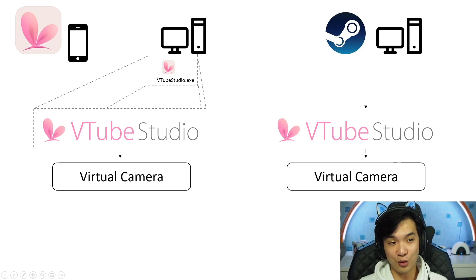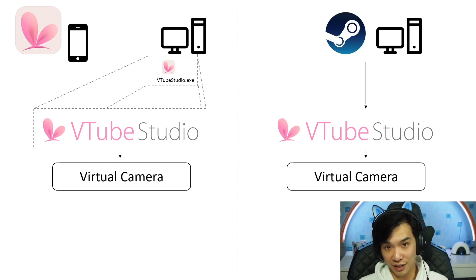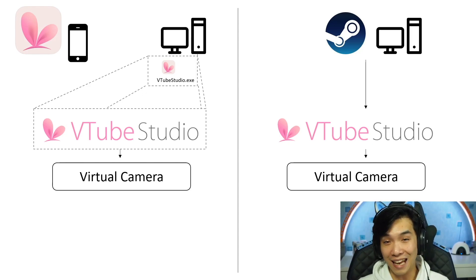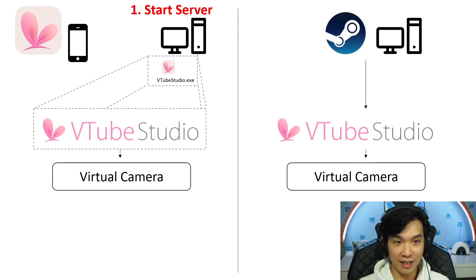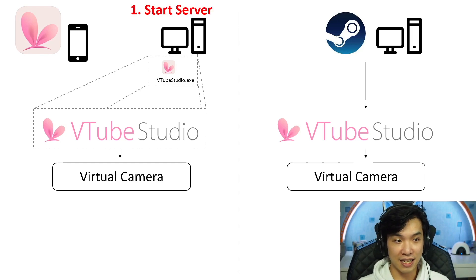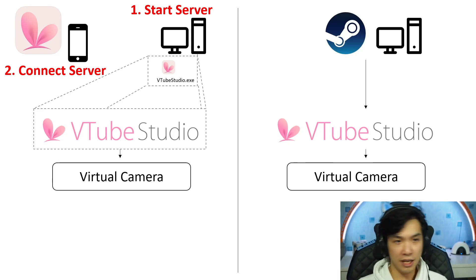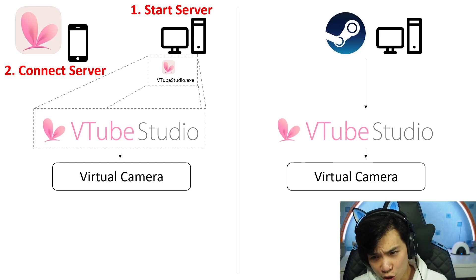First of all, you have to download the app itself, which is for free. And then, now this is the complicated part, you have to also download the executable file. All you need to do is to start a server and then you connect, start your VTube Studio, start the tracking, and become a virtual YouTuber.